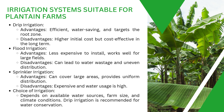Drip irrigation delivers water in drops one after the other through pipes. The advantage is that it saves water because it goes directly to the root zone. The disadvantage is that it is expensive to set up, as you have to place pipes at the right spots. However, it is cost-effective in the long run because water goes directly where it needs to go without waste.